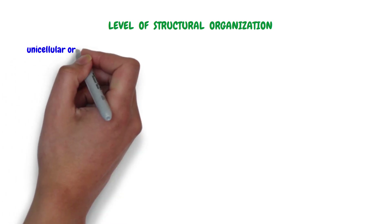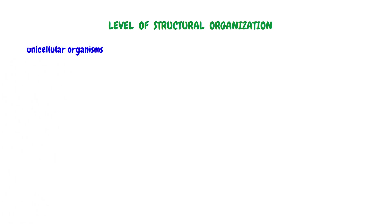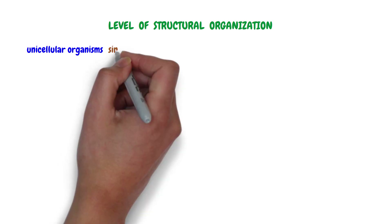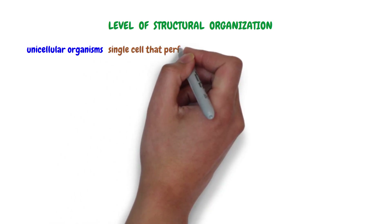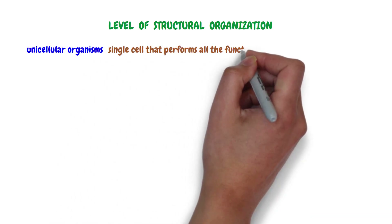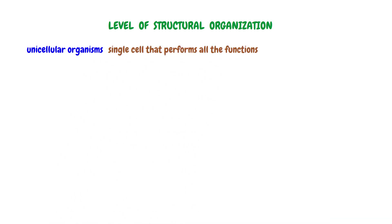Unicellular organisms are single-celled organisms. These organisms exist as a single cell that performs all the functions necessary to support its life. Examples of unicellular organisms include bacteria, such as the amoeba.